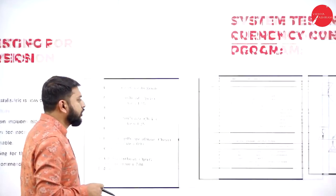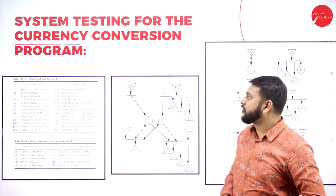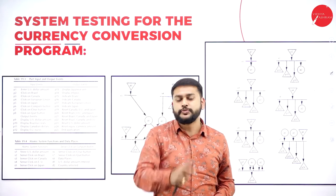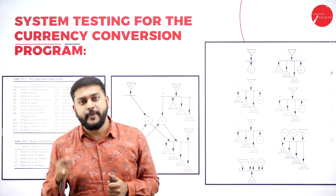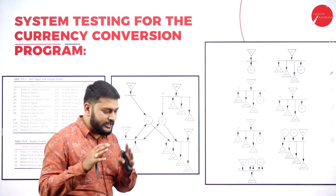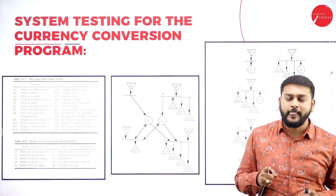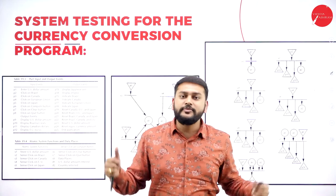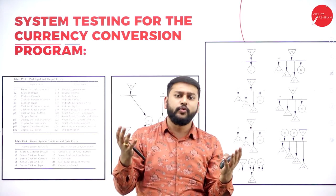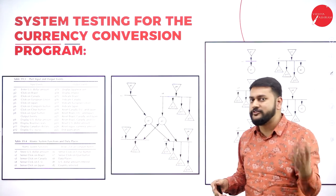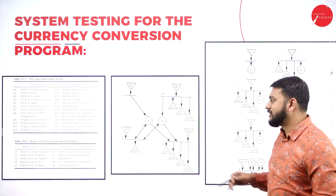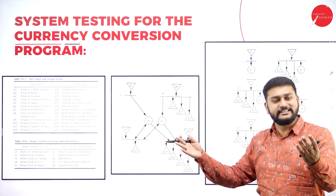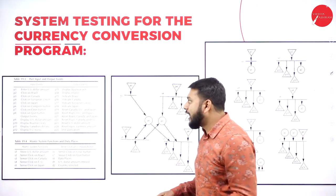Next, we need to understand the concept of system testing with respect to the currency conversion program. For system testing, it is important to understand three diagrams, and I will also speak about threats in a coming slide. The first diagram is about the EDP program, which I have already discussed in a previous video. The second diagram is about the Petri net, which we have also discussed in previous sessions.